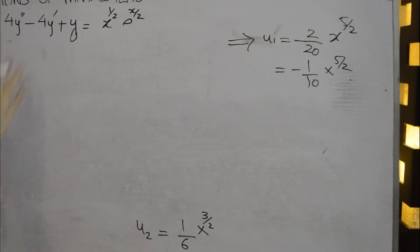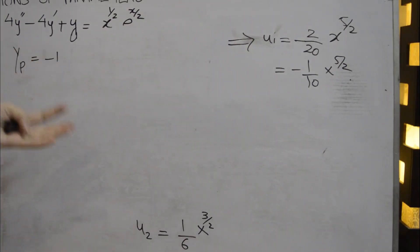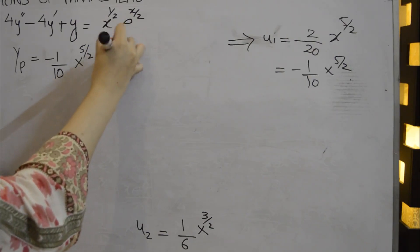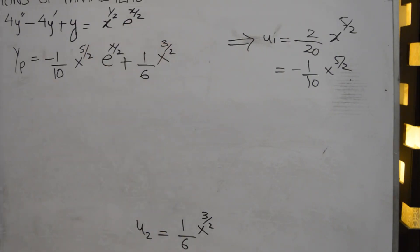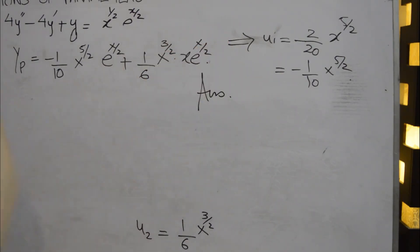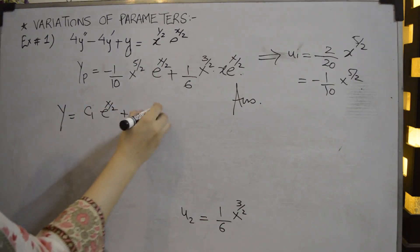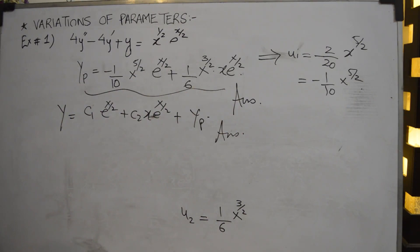Now replacing these values: yp = u1*y1 + u2*y2 = (-1/10)*x^(5/2)*e^(x/2) + (1/6)*x^(3/2) * x*e^(x/2). The general solution is y = c1*e^(x/2) + c2*x*e^(x/2) + yp. That's the complete general answer. Variation of parameters is a versatile method applicable to every kind of non-homogeneous linear higher-order differential equation.